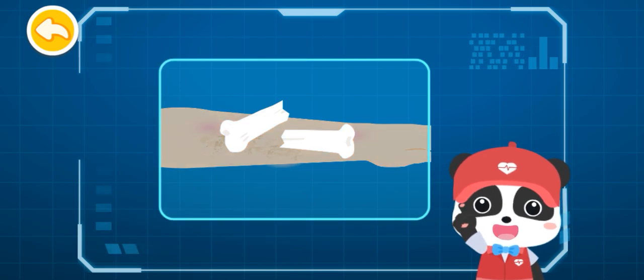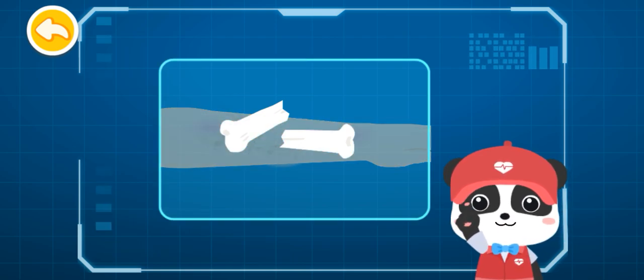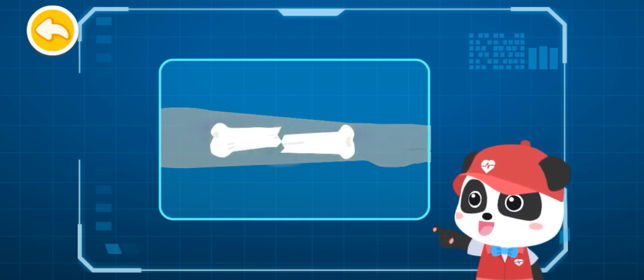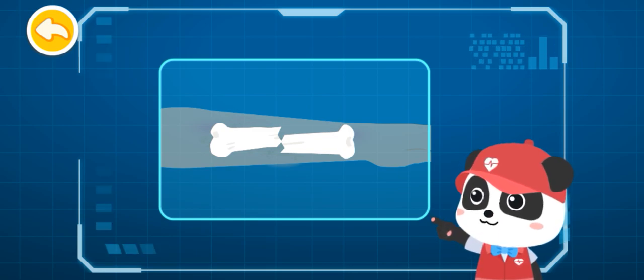A bone that pierces through the skin indicates an open fracture. A bone that does not pierce through the skin indicates a closed fracture. The injured suffer from a closed fracture of his hand.